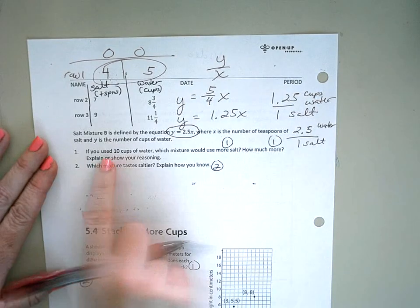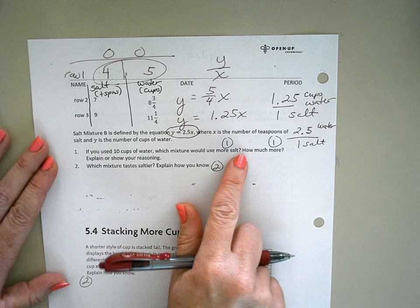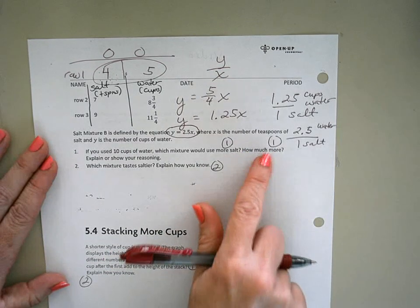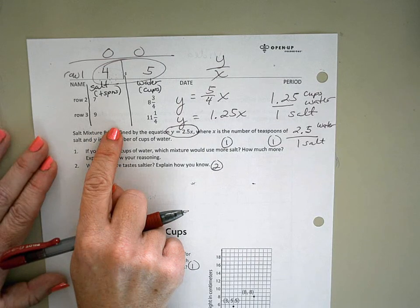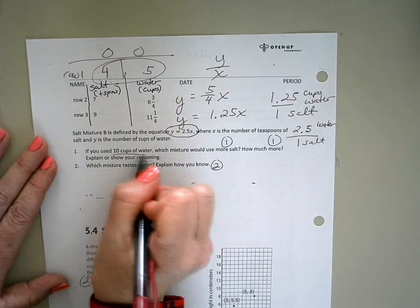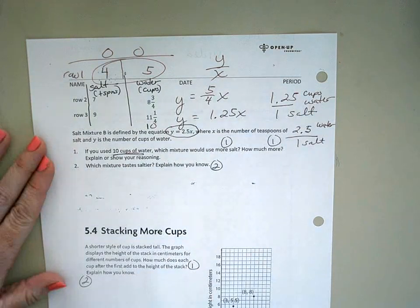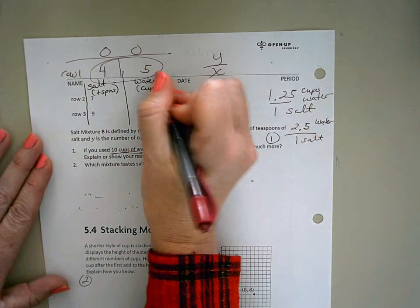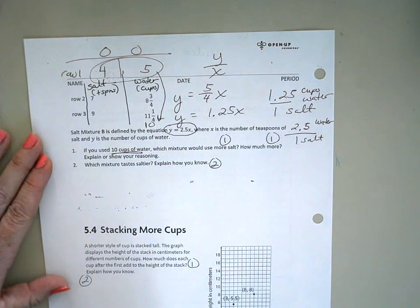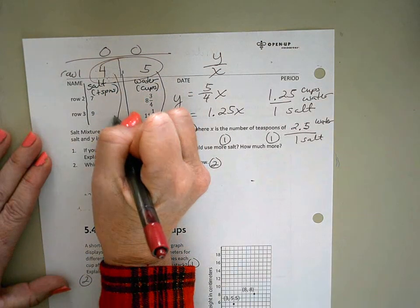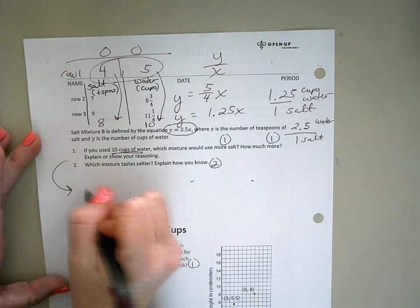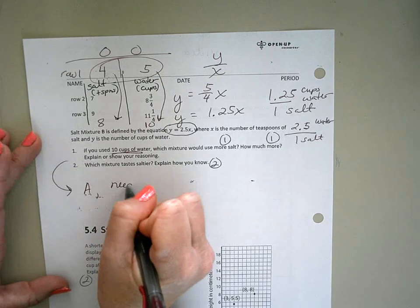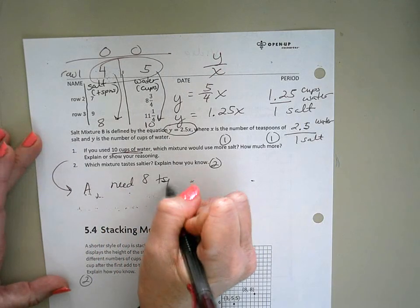If we use ten cups of water, which mixture would use more salt and how much more? All right, so I'm going to use my table here for this one. Ten cups of water, so I'm going to put a ten right here. Because it's this nice proportional relationship, I can say five times two is ten, so four times two is eight. So for salt mixture A, we would need eight teaspoons of salt.